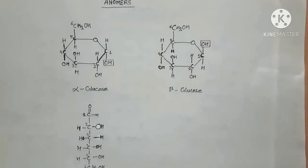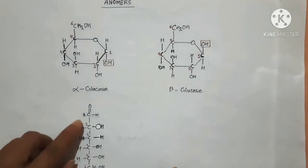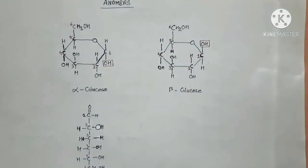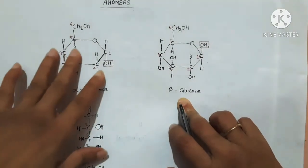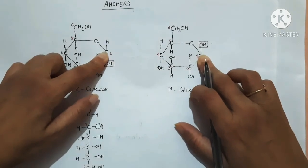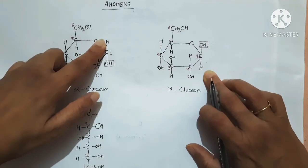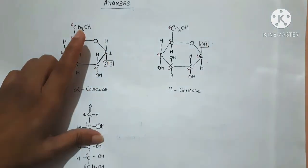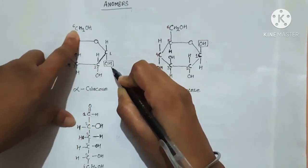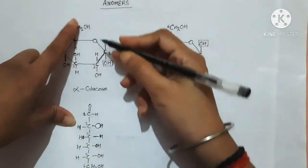Anomers are cyclic monosaccharides that differ only at the anomeric carbon, meaning at C1 the arrangement of attached groups differs in their cyclic form. The anomers of glucose are alpha glucose and beta glucose. Both are glucose, but they are anomers because at carbon 1 the spatial arrangement of the hydroxyl group and H atom differs.